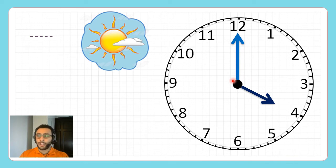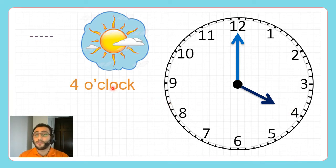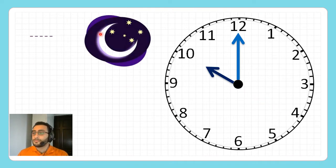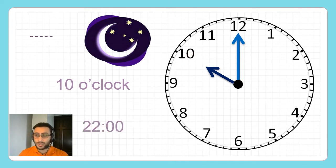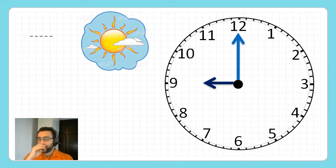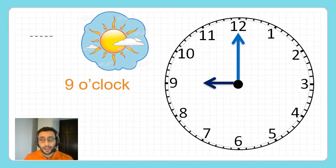What time is it now? It is 4 o'clock in the afternoon, right? But if you want to write it on a 24-hour clock, this is 16. Or look at this one — it's nighttime, it's 10 o'clock at night, or it is 22. What about this one? It's 9 in the daytime, so it's 9 o'clock in the morning, or just 9.